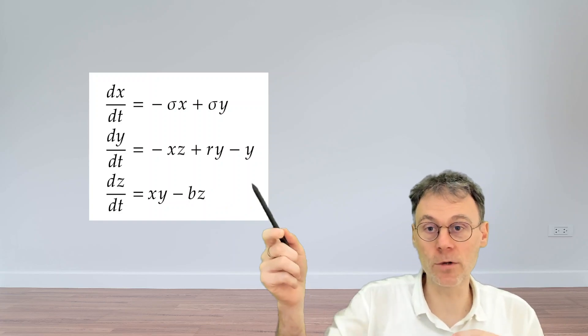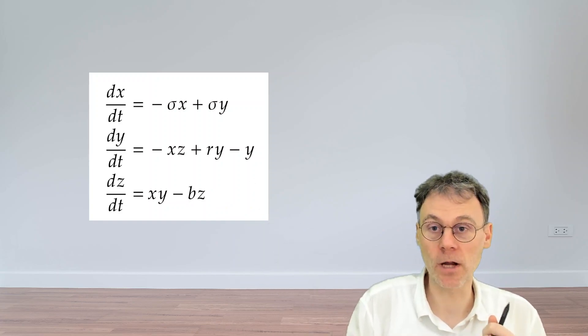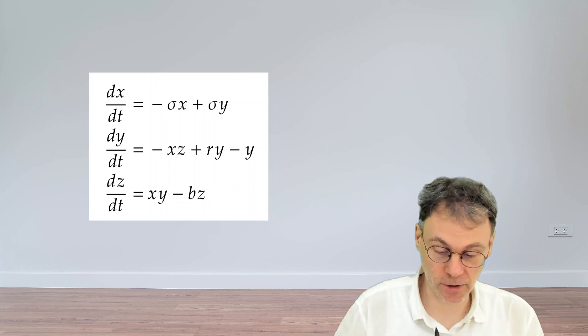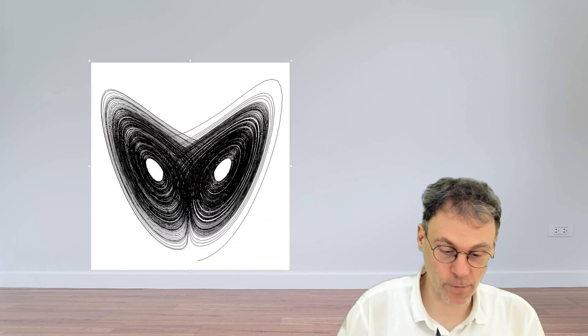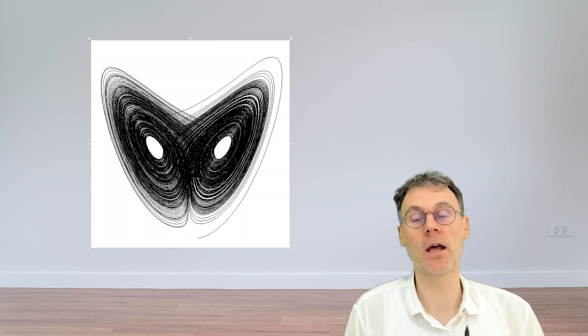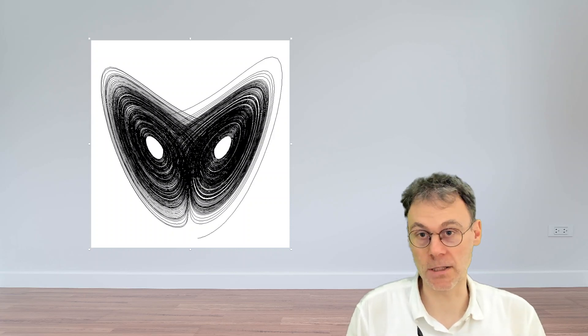Now, when he was solving these equations on a computer, he actually discovered a very nice chaotic attractor, which is represented by this diagram over here, and which in the end got his name, so this is the Lorenz attractor.